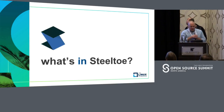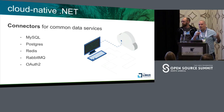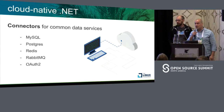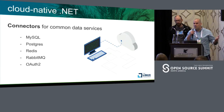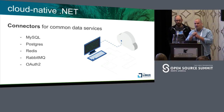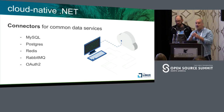So what's in SteelToe? The libraries roughly fall into two categories. The first are things that support cloud-native .NET, especially running .NET applications on Cloud Foundry. The first group are connectors — built-in connectors that automatically wire up your connection to common backing data services like MySQL, Postgres, Redis, RabbitMQ, and even OAuth. On Cloud Foundry, when you deploy an application and bind a backing service, the credentials get injected into the environment of the container. SteelToe just wires all those up automatically.